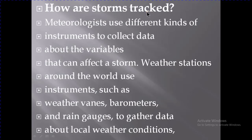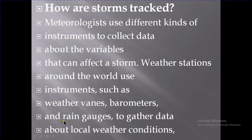How are storms tracked? Meteorologists use different kinds of instruments to collect data about the variables that can affect a storm. Before a storm, many changes occur, and meteorologists detect these changes using instruments such as wind barometers and rain gauges to gather data about local weather conditions, so they can determine what the weather conditions will be.